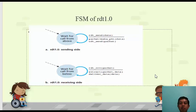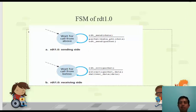In the next lecture we will introduce errors in the network layer and see what changes are required to the FSMs to handle those errors — how the protocol will be modified so that whenever errors are introduced, the protocol can handle them. This will be the topic of our subsequent lecture.